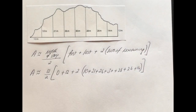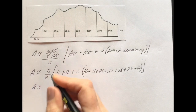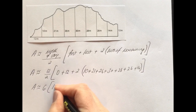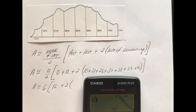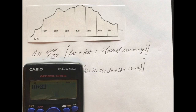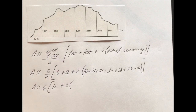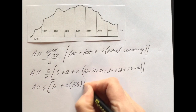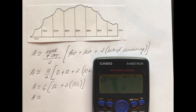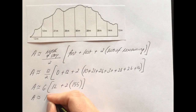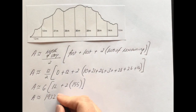Close the bracket and the square bracket. Now evaluate: 12 divided by 2 is 6. Zero plus 12 is 12. Then 2 times (10 plus 21 plus 26 plus 30 plus 28 plus 26 plus 14), which is 2 times 155. So we have 6 times (12 plus 2 times 155). Typing this in gives 1932 meters squared. Don't forget your units - meters squared.